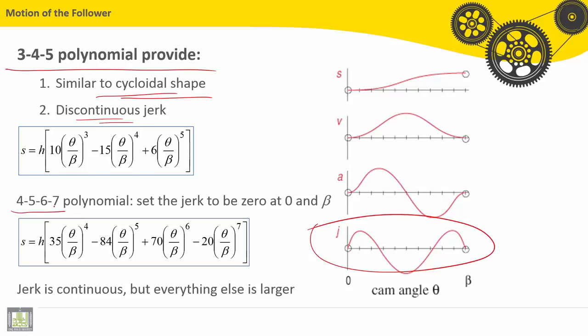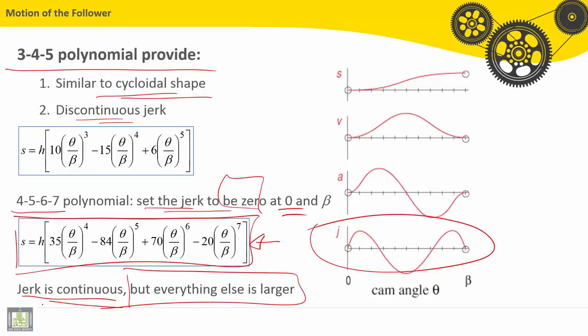4, 5, 6, and 7 polynomial function set the jerk to be 0 at 0 and beta. Then we can find the position function. So the jerk is continuous, but everything else is larger, especially velocity and acceleration.